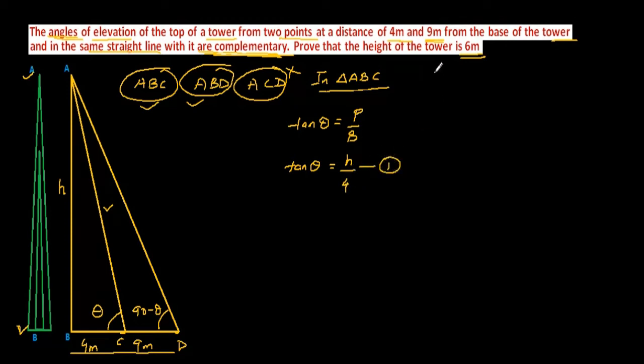Now, in triangle ABD, we are going to take tan theta. But here in this case theta will be 90 minus theta. Angle will be 90 minus theta in triangle ABD. So it will be perpendicular by base. Tan 90 minus theta is cot theta.